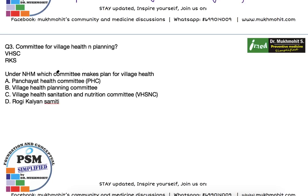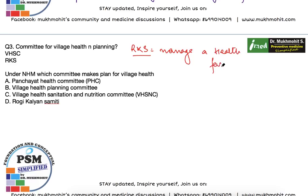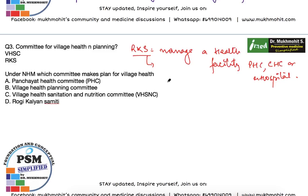Next MCQ is about the committee for village health and planning. There are different types of recalls: Village Health Sanitation and Nutrition Committee, Village Health Planning Committee, Panchayat Health Committee, and Rogi Kalyan Samiti. A quick word on RKS — Rogi Kalyan Samiti — this is a collection of individuals who manage a health facility, usually at a PHC, CHC, or hospital level.